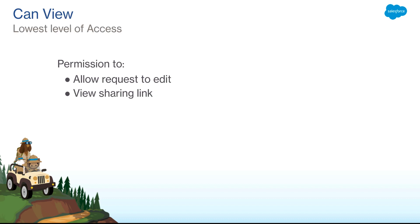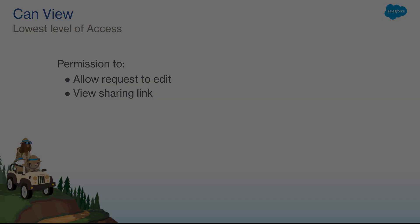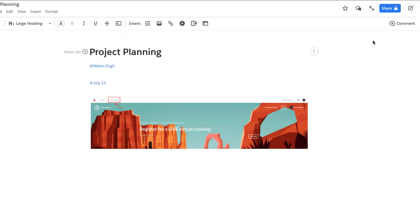Can view is essentially the view-only link sharing permission. This allows you to request an edit as well as view the sharing link.